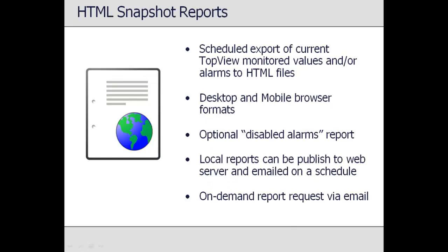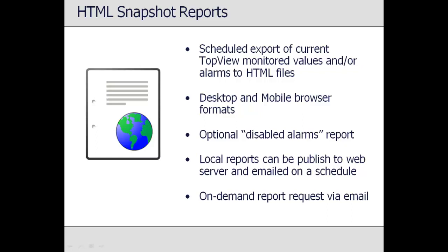HTML snapshot reports are similar to scheduled alarm reports, but they only include the current state of measurements and alarms. Multiple snapshot reports can be created at fixed intervals, each with different tag group filters and different HTML output files. Each snapshot report can be formatted and optimized for desktop or mobile devices. Snapshot reports can also be created to provide reports of disabled alarms, to help ensure that disabled alarms have not been accidentally forgotten. Although created locally, snapshot reports can be published to remote web servers, and like alarm reports, can be emailed at specific times to one or more recipients.